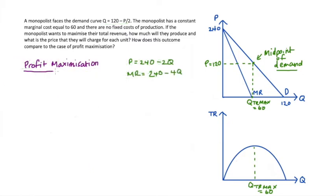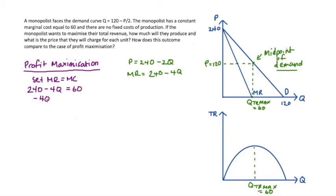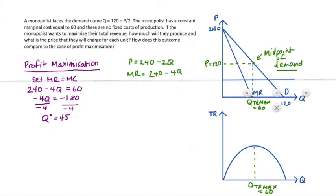Let's compare this result with profit maximization. I'll keep the inverse demand curve and marginal revenue function for reference. To maximize profit, the monopolist sets quantity such that marginal revenue equals marginal cost. Substituting: marginal revenue is 240 minus 4Q and marginal cost is 60. Solving for Q: subtracting 240 from both sides gives negative 4Q equals negative 180, so Q equals 45. This is our profit-maximizing quantity, Q star.